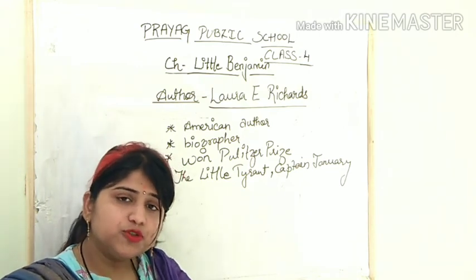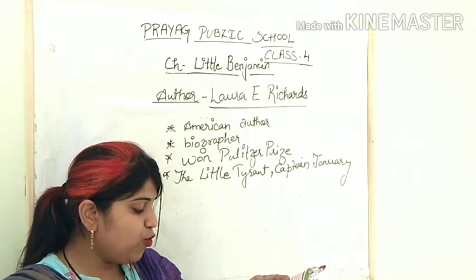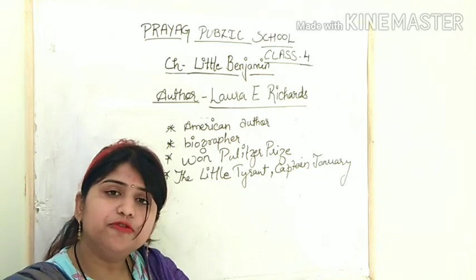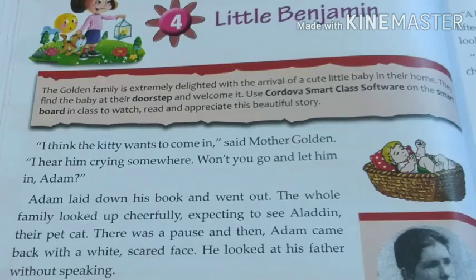Okay students, open your literature books to page number 24. Chapter 4: Little Benjamin. The Golden family is extremely delighted with the arrival of a cute little baby in their home. They find the baby at their doorstep and welcome it.